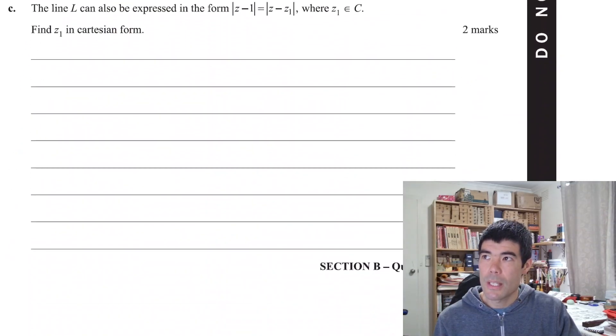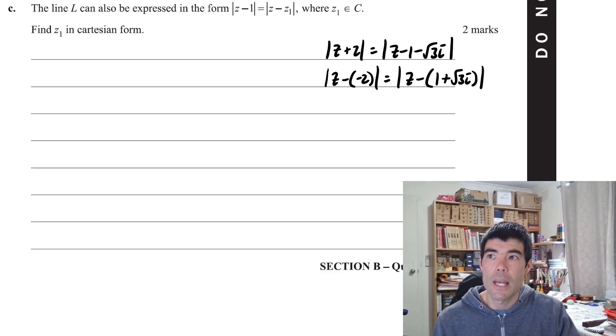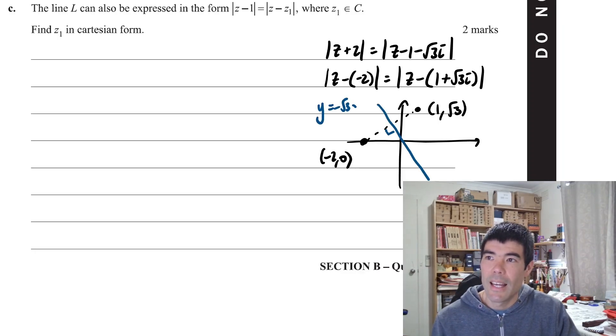The next part is a little bit different. For this one, we really want to have an understanding of the perpendicular bisector form. So even if we just go back to the original equation and rewrite that in the form |z-(-2)| = |z-(1+√3i)|. Then we can see that the line L is the perpendicular bisector of the segment joining (-2,0) and (1,√3). And for part C, we're interested in the perpendicular bisector of the point (1,0) and another mystery point z1. So there's a few ways we can go about this and I'll show a few different ways.